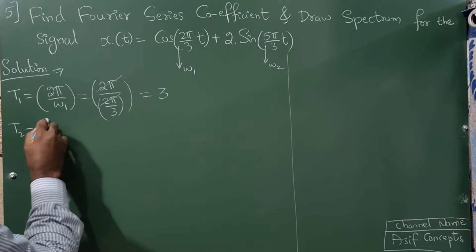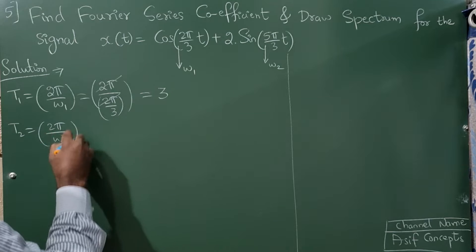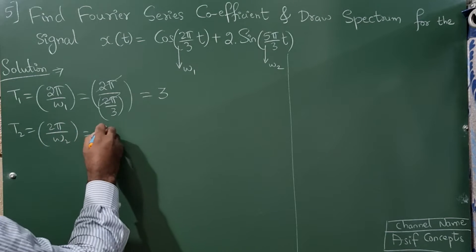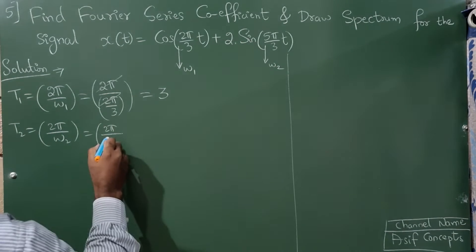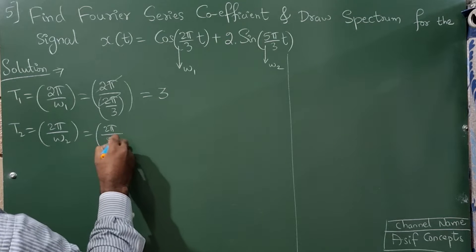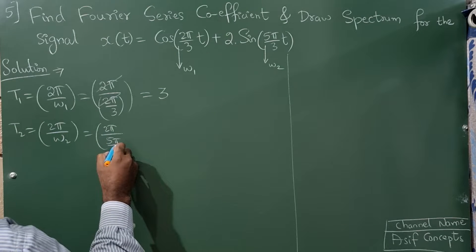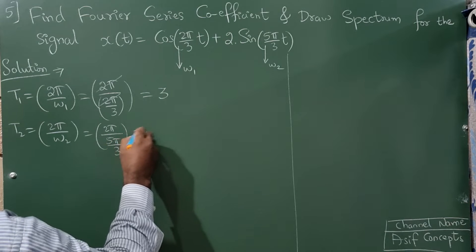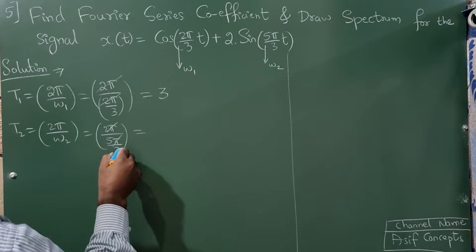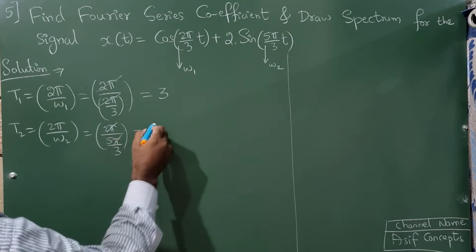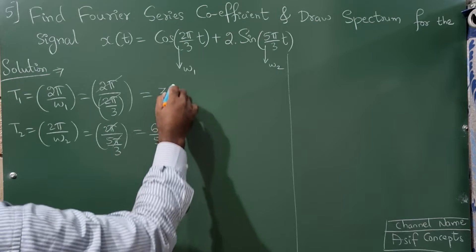Now T2 = 2π/ω2. ω2 = 5π/3, so T2 = 2π / (5π/3). The π cancels, 3 goes to the numerator: 2·3 = 6, so T2 = 6/5.